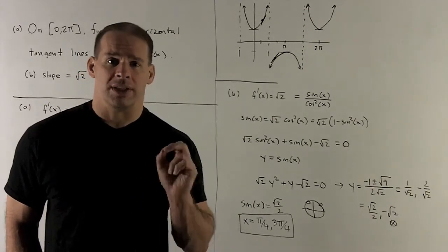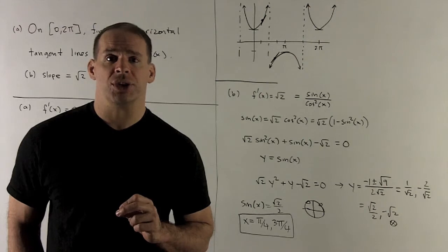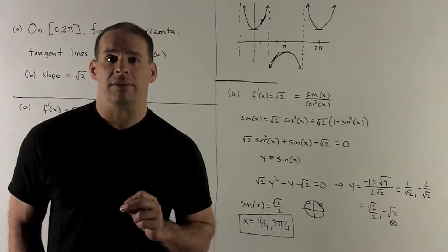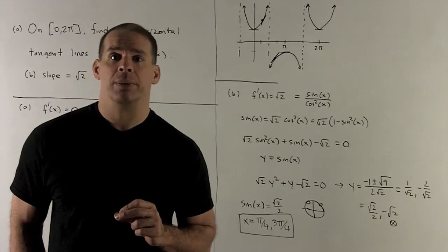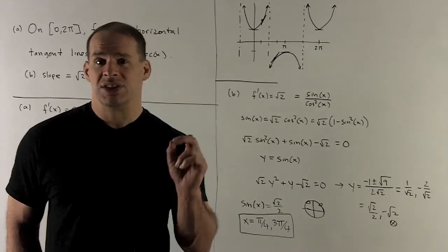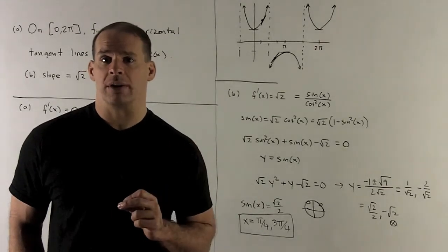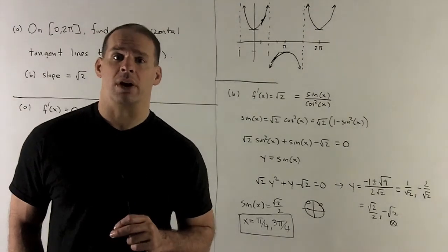How about if we want the slope of the tangent line equal to √2? Then we're going to have to solve that same equation equal to √2 instead of 0. So I want to know when is sin(x)/cos²(x) equal to √2.